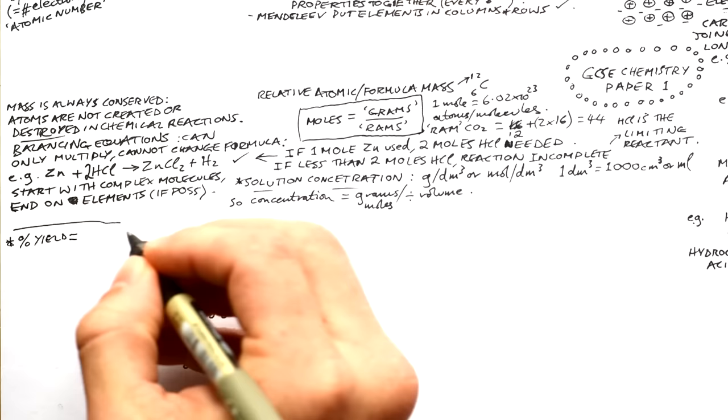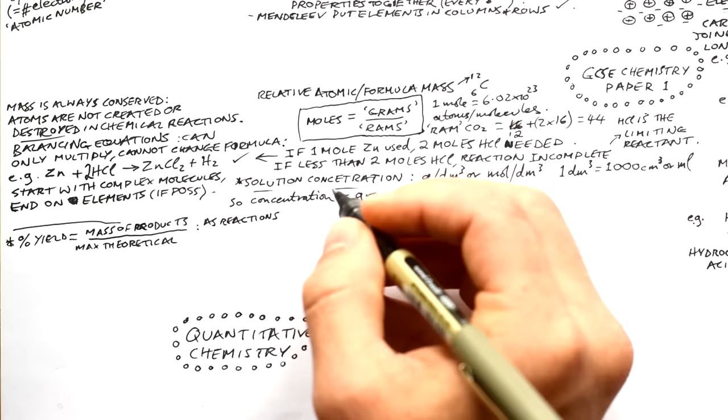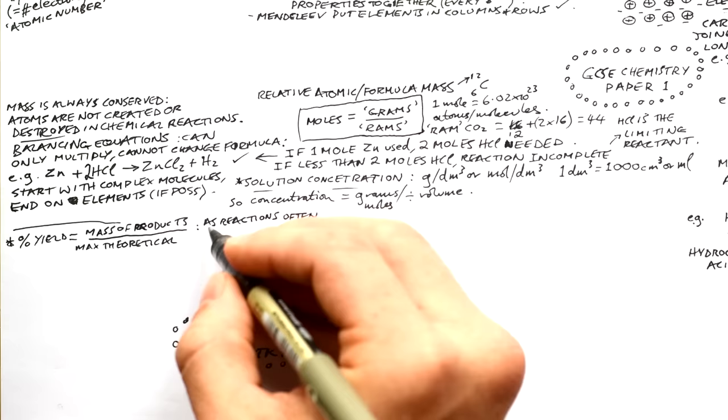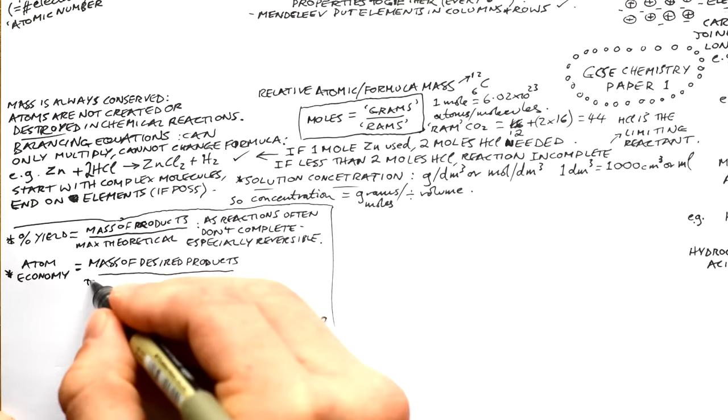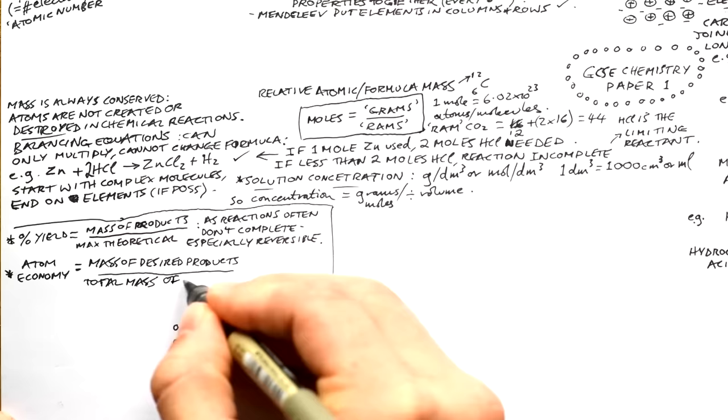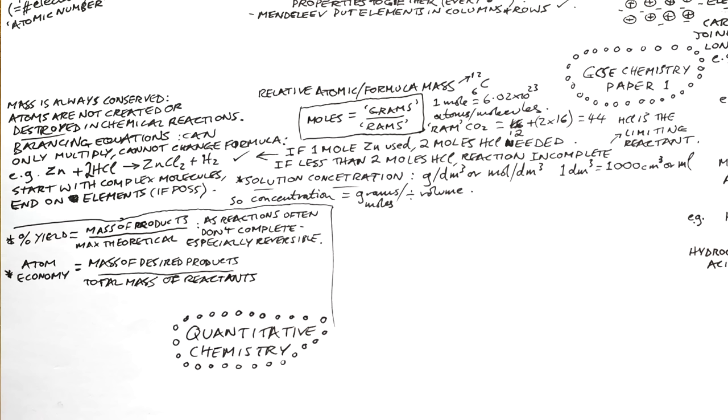Percentage yield is how much product you actually get compared to the maximum theoretically possible: mass of product divided by maximum theoretical mass. Reactions often don't complete — especially reversible reactions like the Haber process. Atom economy is different — it's the mass of desired products divided by the total mass of all reactants. This applies even if yield is 100%, because other unwanted products may be formed.